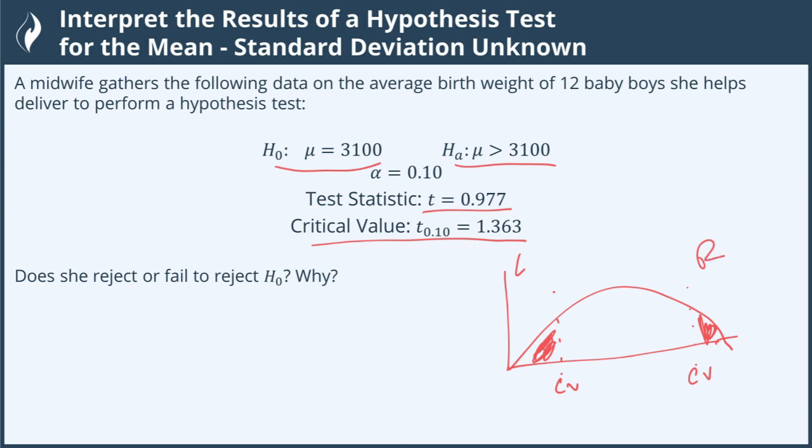Here is a right tail test. Anything greater than goes over here, anything less than goes over here. In our case, our alternative hypothesis is stating that the mean is greater than 3100, so we are doing a right tail test.